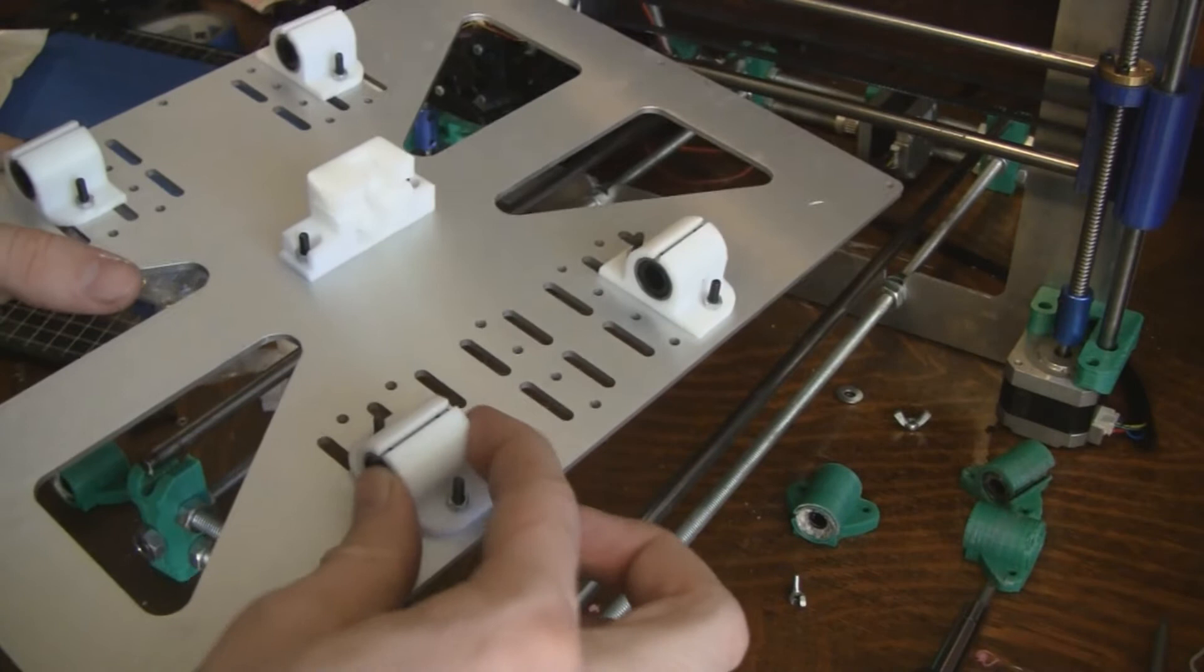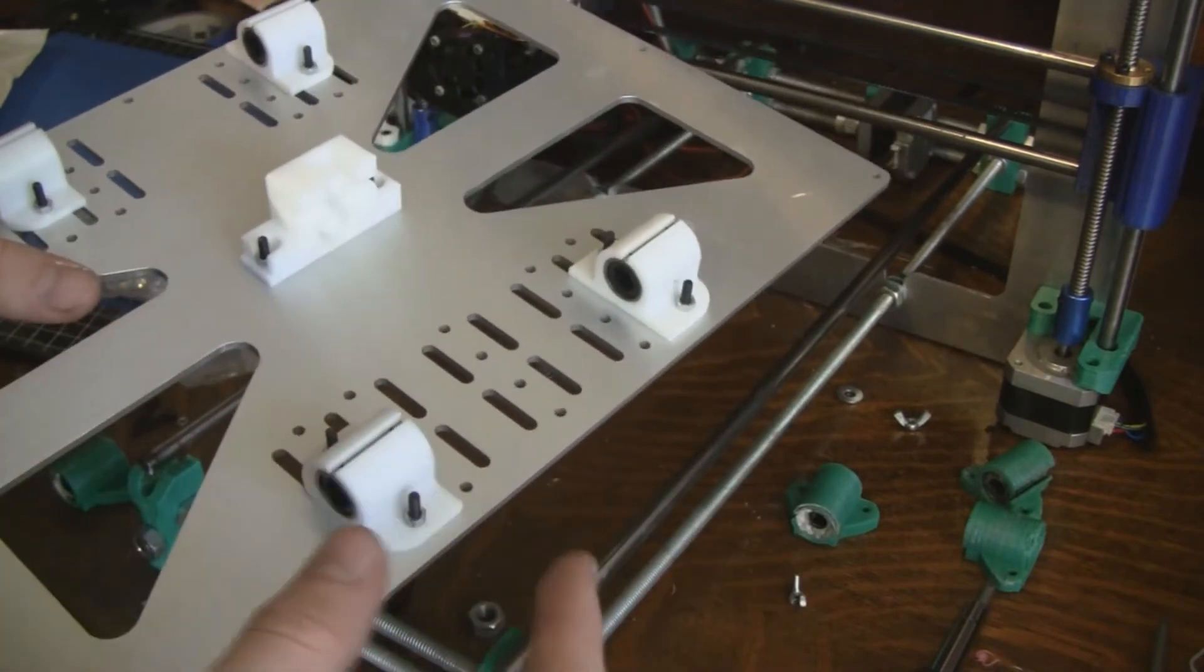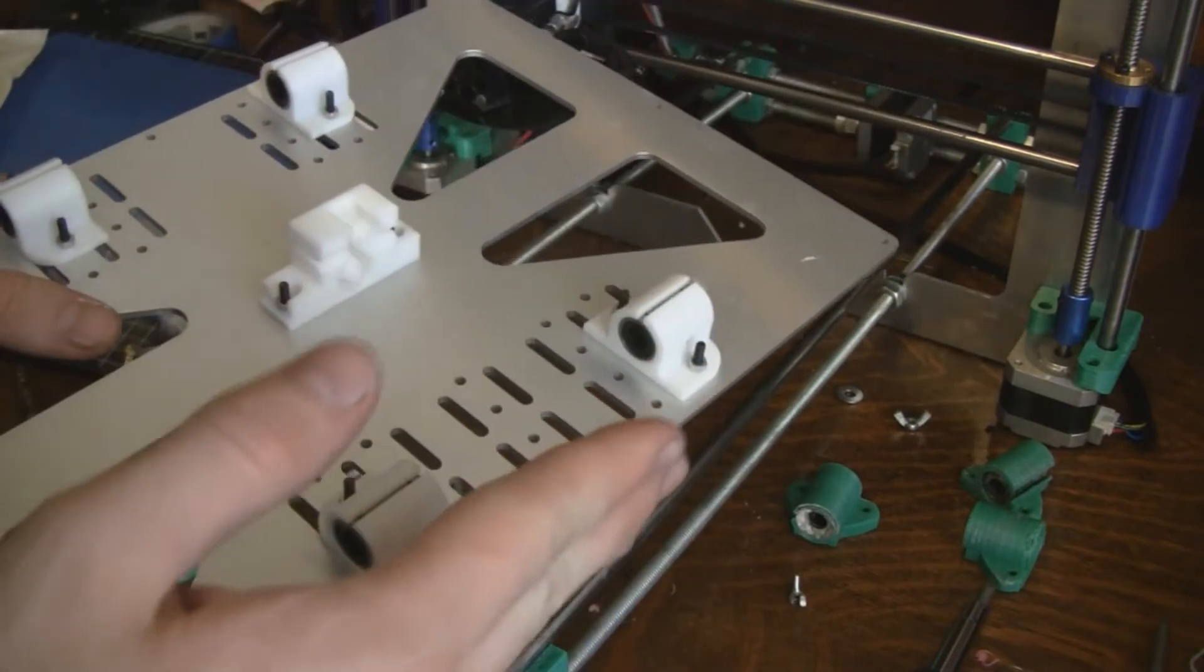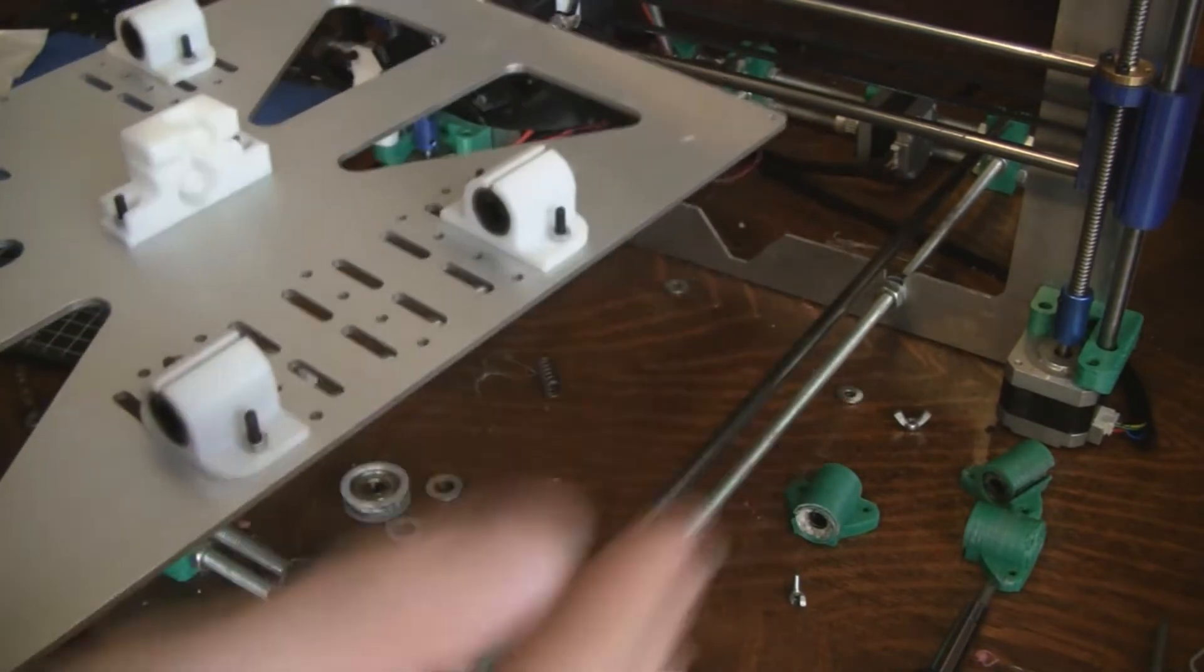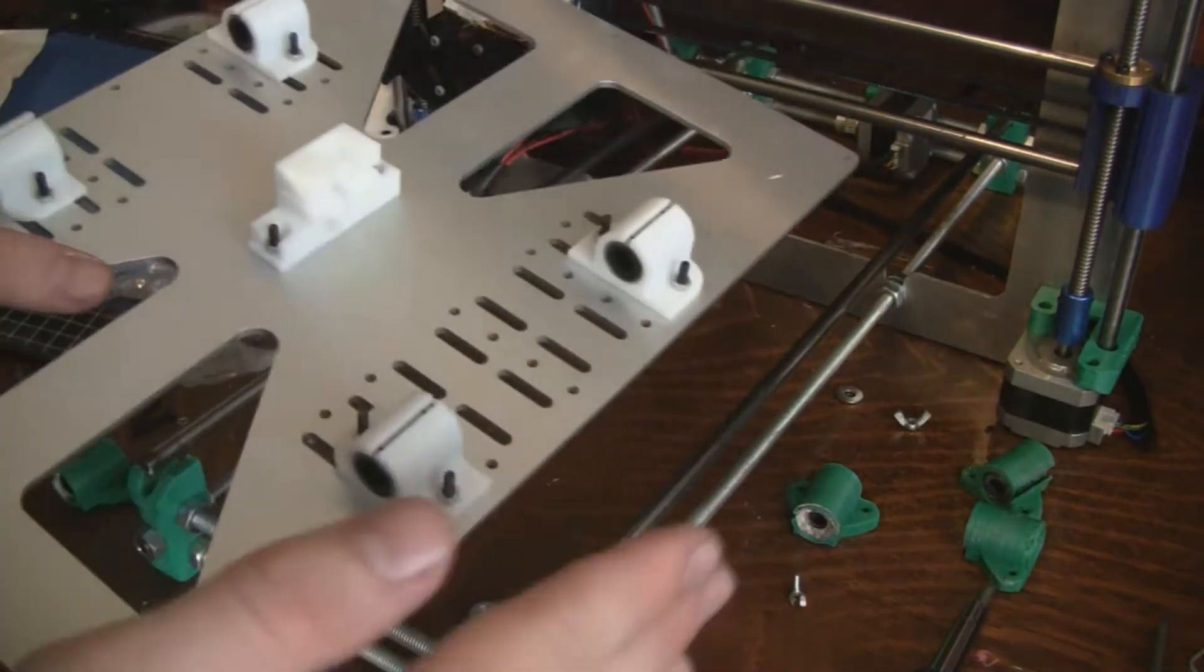The reason I left these loose is that if I were to tighten them down now, there would be a possibility that they wouldn't be perfectly in line with each other. So if I put them on now, I can line them up perfectly and then tighten them down so I know they're actually straight and true.